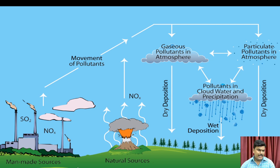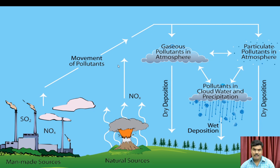The man-made sources of pollutants contribute to the movement of pollutants into the atmosphere. Natural sources produce nitrogen oxide that mixes with atmospheric air, creating gaseous pollutants in the atmosphere. After dry deposition occurs, pollutants in cloud water and precipitation lead to wet deposition on the earth. Particulate pollutants in the atmosphere also undergo dry deposition to the earth.